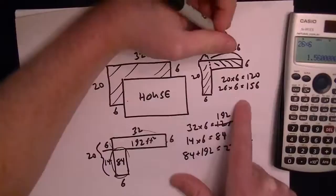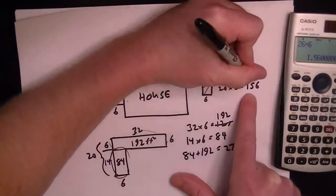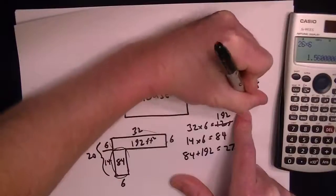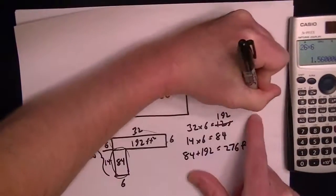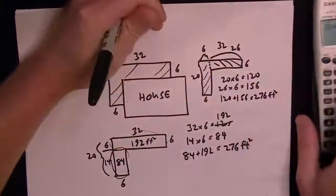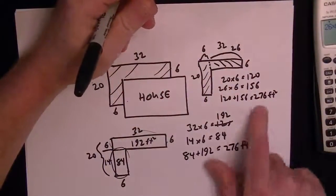So then if you add the two areas that we found by breaking it up, you're going to get 120 plus 156 equals 276 foot squared.